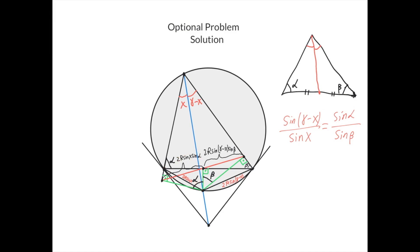So we need to prove that 2r sine of (gamma minus x) times sine of beta equals 2r sine of x times sine of alpha. We take the equality we proved earlier and cross-multiply: sine of (gamma minus x) times sine of beta equals sine of x times sine of alpha. Multiplying both sides by 2r gives exactly what we needed to prove: 2r sine x sine alpha equals 2r sine of (gamma minus x) sine beta.